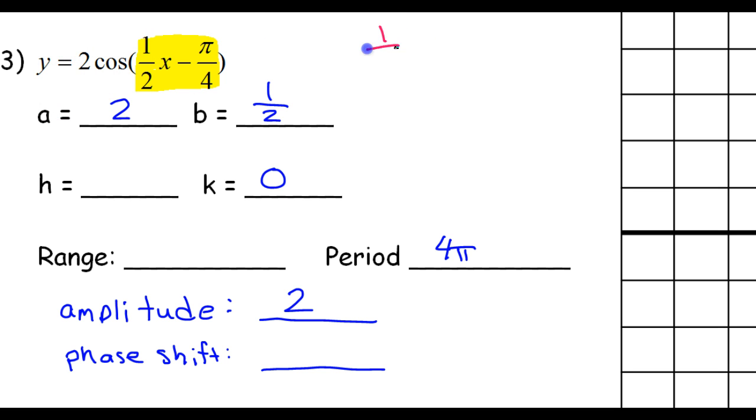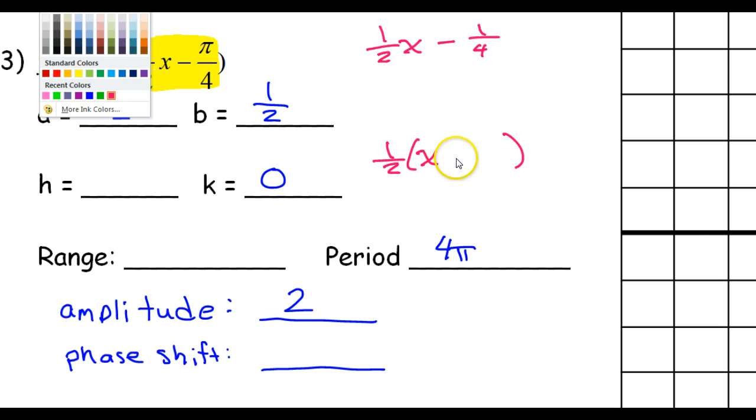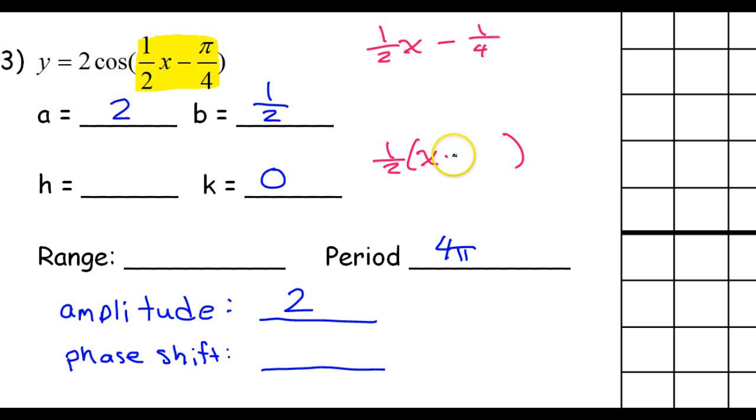Let me recopy. What I have here is 1 half x minus π over 4. Somehow, I need to take the 1 half out of parentheses. So, of course, that's going to leave x. To figure out what comes here, I need to divide. Anytime you want to know what goes on the inside when you factor something out, you can always divide by the factor that you pulled out.